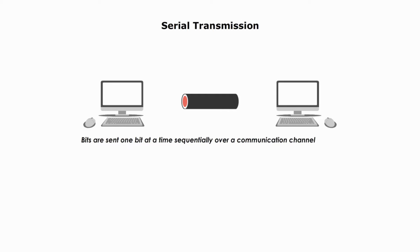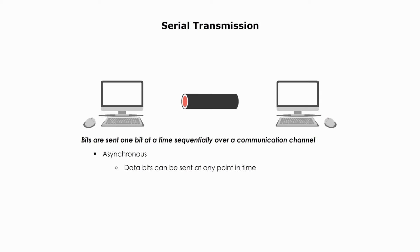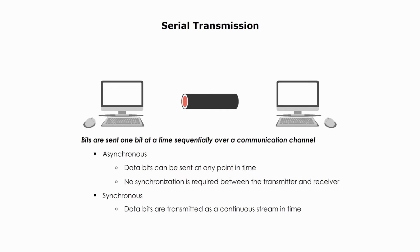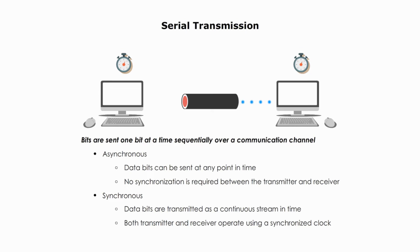Now let's talk about serial transmission. In serial transmission, data are sent one bit at a time, bit by bit, sequentially over a communication channel. Serial transmission can be both asynchronous and synchronous. In asynchronous transmission, data can be sent at any point in time and no synchronization is required between the transmitter and receiver. In synchronous transmission, data are transmitted as a continuous stream in time, and both transmitter and receiver operate using a synchronized clock.